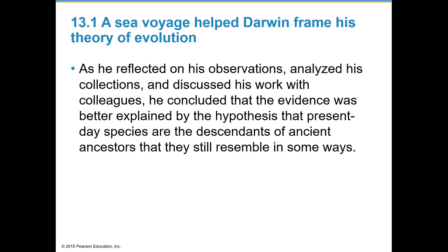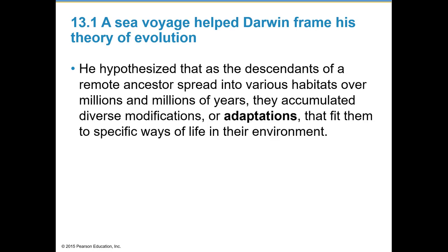As Darwin reflected on his observations, analyzed his collections, and discussed his work with colleagues, he concluded that the evidence was better explained by the hypothesis that present-day species are descendants of ancient ancestors they still resemble in some ways. He hypothesized that as descendants of a remote ancestor spread into various habitats over millions of years, they accumulated modifications or adaptations that fit them to specific ways of life.